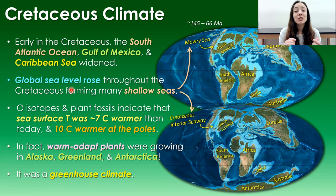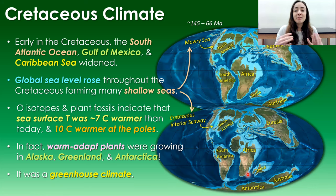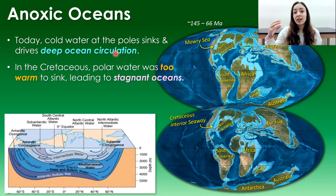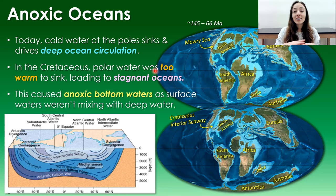Things were so warm at the poles that in Alaska, Greenland, and Antarctica, warm-adapted plants were growing based on fossil evidence. This was a greenhouse climate with an enormous effect on ocean circulation. Today, cold water at the poles sinks and drives deep ocean circulation, providing oxygen to deep water. In the Cretaceous, however, polar water was too warm to sink, leading to stagnant water columns throughout the ocean.